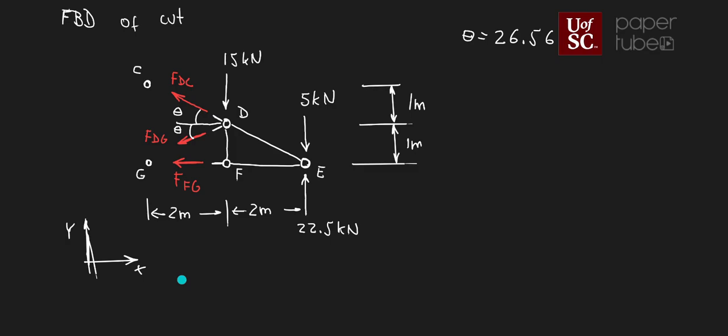The next step is to write the equations of equilibrium and solve for the unknowns. I can sum forces in X, sum forces in Y, or sum moments. I'm going to use sum of moments. Why can we use moments in the method of sections but not in method of joints? In the method of joints, all forces go through the same point so moments about that point are zero. Here we have a rigid body, so we can use sum of moments. I'll start with sum of moments about D because two unknowns pass through that point, leaving only FFG.